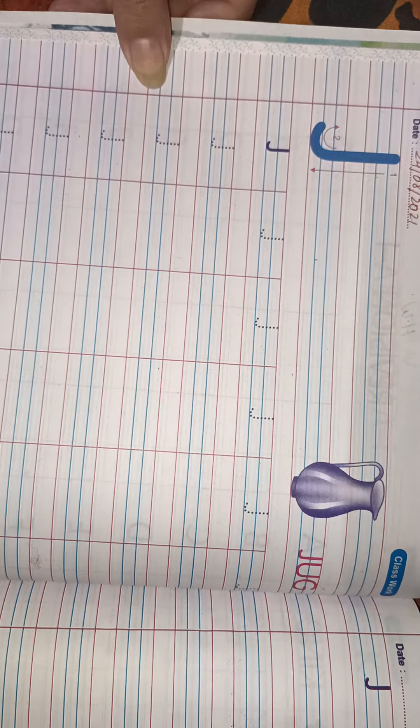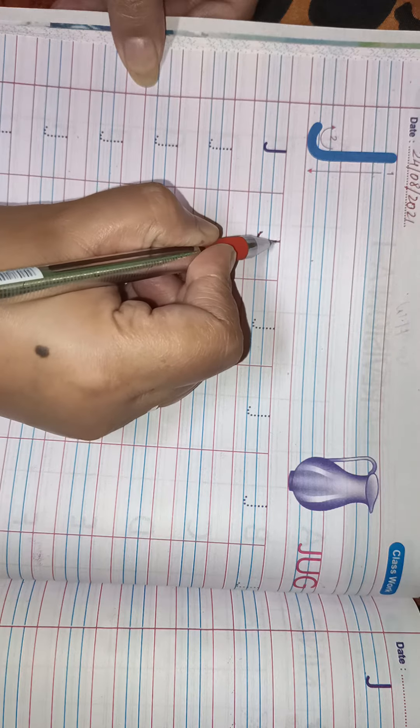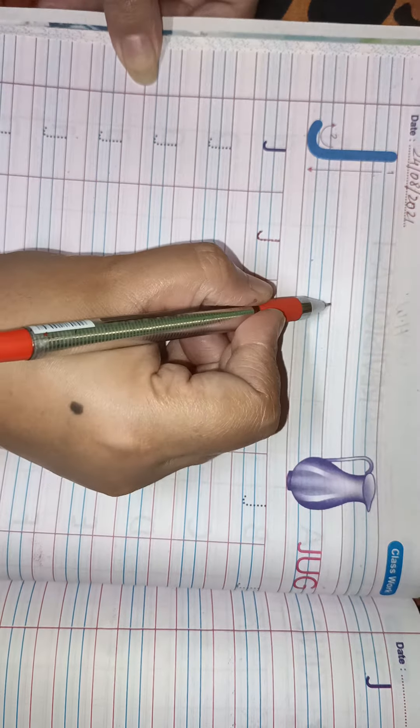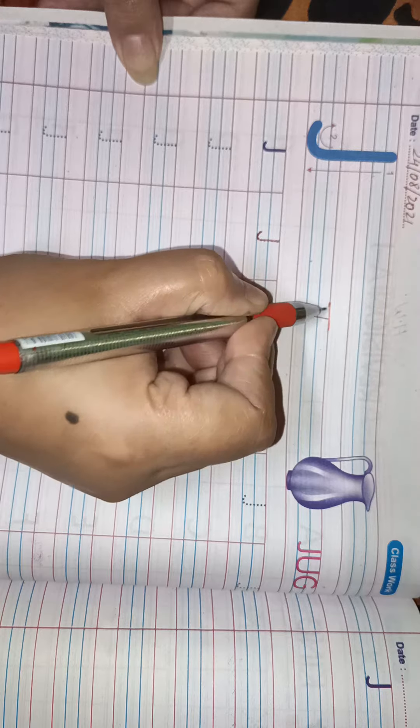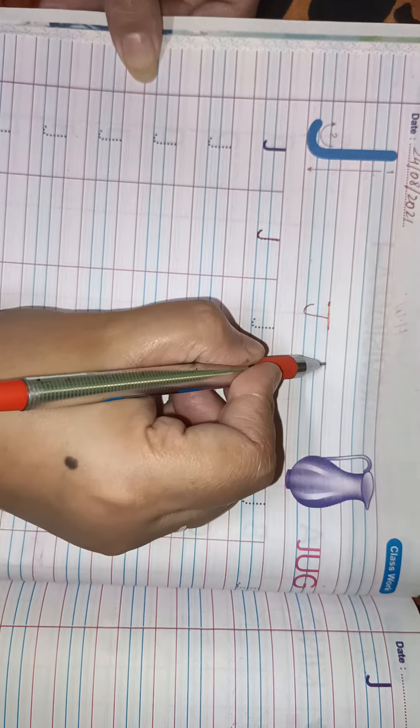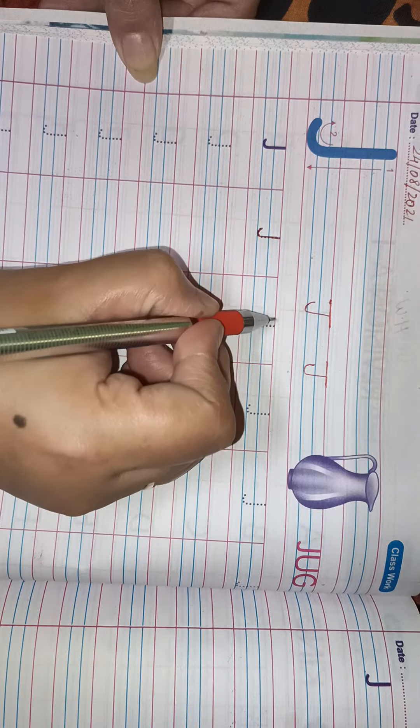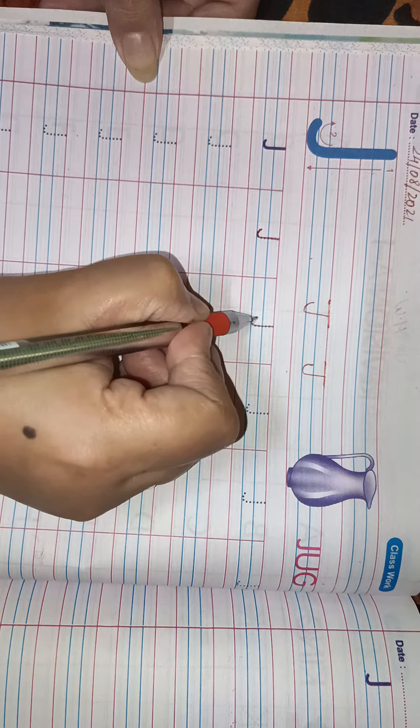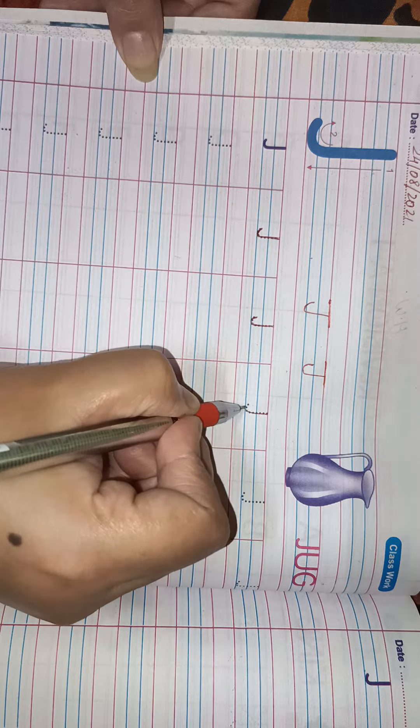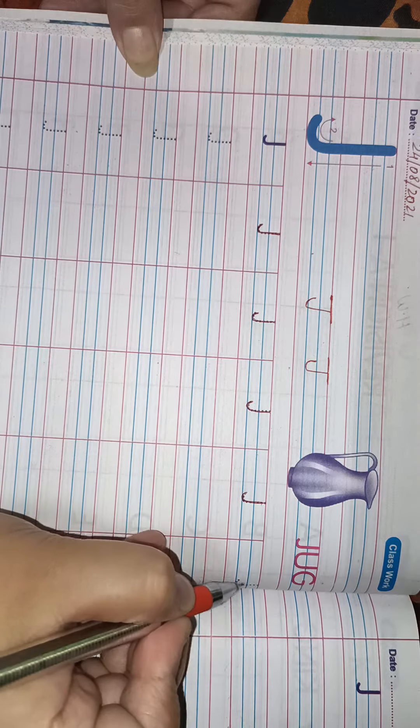jug hota hai. Ab, sabse pehle ye jo dots hain, inko aap log milayenge like this. Hum generally J aise bhi likh sakte hain capital mein. Yahan pe upar line nahi di gayi hai, but hum aise bhi J likhte hain. So pehle aap in dots ko mila lijiye. Yeh hamara ban ta hai J. J for jug.